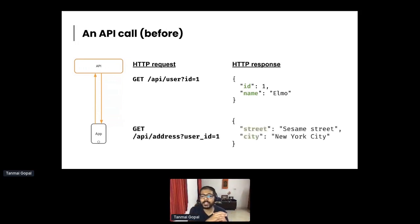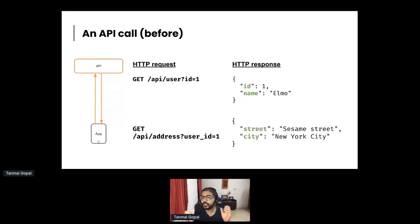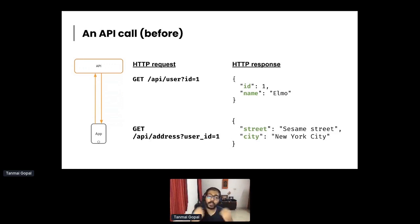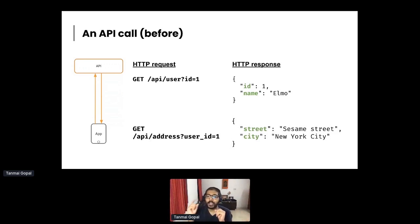Now let's say you want more data. You don't just want the user's ID and name, but also the user's profile information — maybe their address. So you make another API endpoint: slash address parameterized by user ID equals one, and you get the address data. You have these resources and you fetch them on demand.